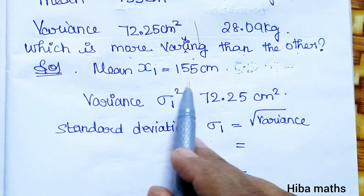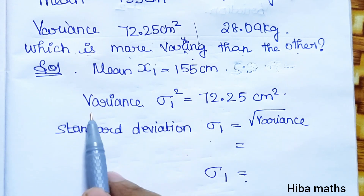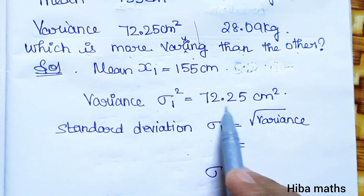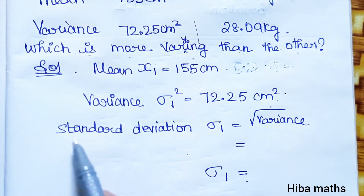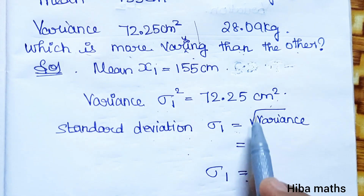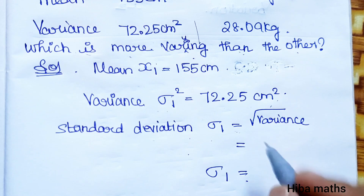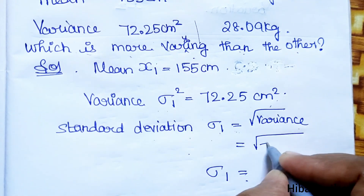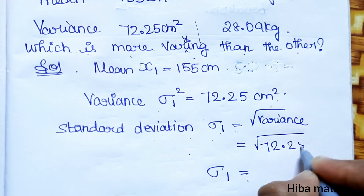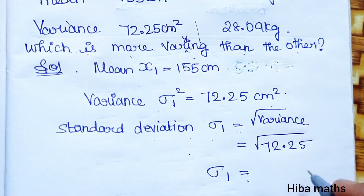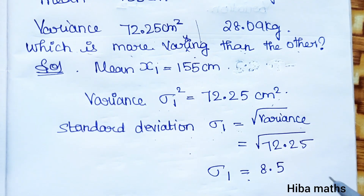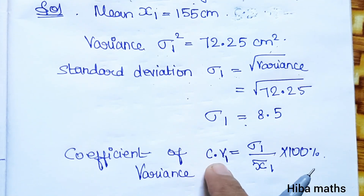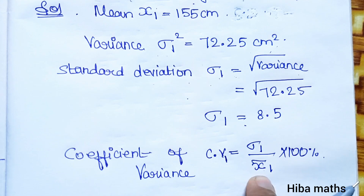For height: mean is 155 cm and variance is 72.25 cm². Standard deviation equals the square root of variance. So standard deviation = √72.25 = 8.5.